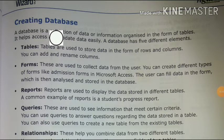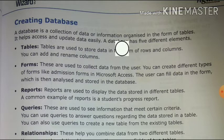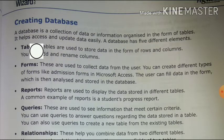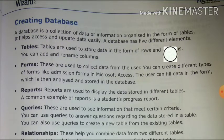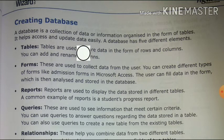Next topic: how to create a database. A database is a collection of data or information organized in the form of tables. It helps access and update data easily. A database has five different elements.